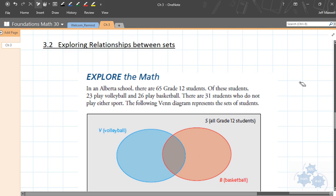So if you take a look at Explore the Math, page 159, you all should be on that page right now. It says, in an Alberta school there are 65 grade 12 students. Of these students, 23 play volleyball, 26 play basketball, and 31 don't play either sport.